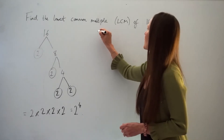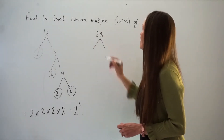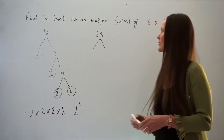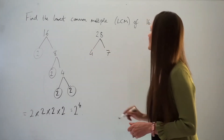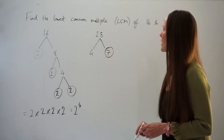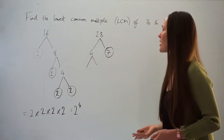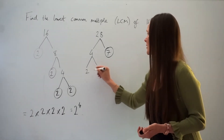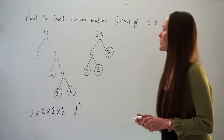Now for the number 28 at the top of the factor tree. Two factors that multiply to give 28: 4 and 7. Seven is a prime factor, so circle that one. Two factors that multiply to give 4: 2 times 2, both of which are prime.